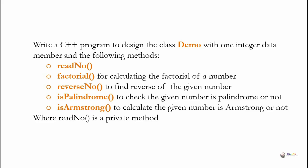Write a C++ program to design the class Demo with one integer data member and the following methods: read_no, factorial for calculating the factorial of a number, reverse_no to find the reverse of a given number, is_palindrome to check if the given number is palindrome or not, and is_armstrong to calculate whether the given number is armstrong or not.